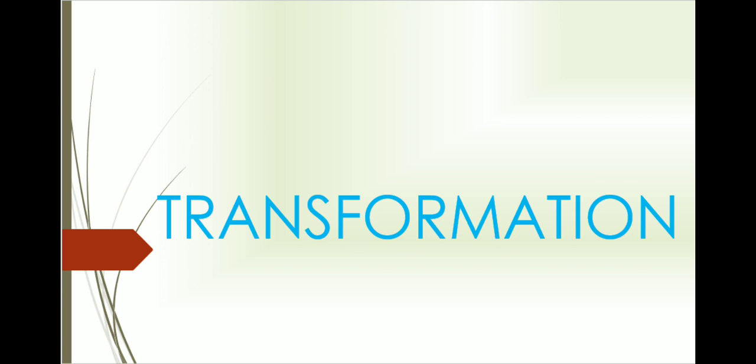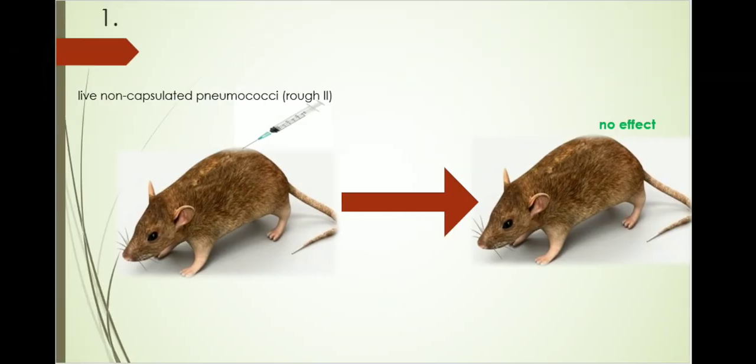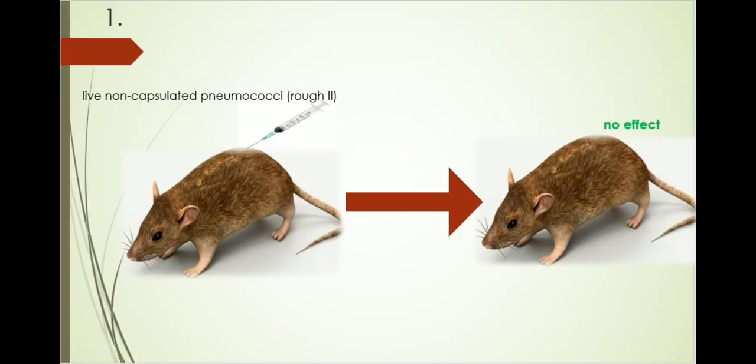In 1928, Griffith demonstrated this phenomenon in mice. The first part of the experiment was that he inoculated live non-capsulated pneumococci, i.e., rough type 2, in mouse. The result was the mouse was not affected.